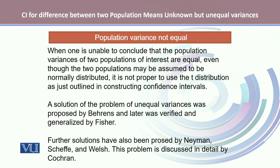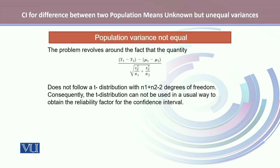The solutions were proposed by Neyman, Scheffé, and Welch, and this problem is discussed in detail by Cochrane. When the variances are unequal, this expression given here does not follow the t-distribution with degrees of freedom n1 plus n2 minus 2.